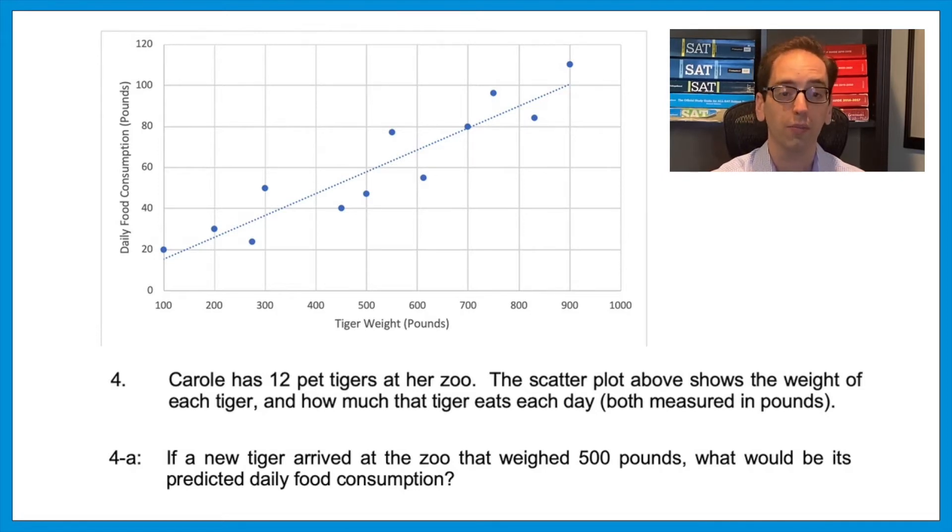If a new tiger arrived at the zoo that weighed 500 pounds, what would be its predicted daily food consumption? So let's go to where the graph says 500 on the x-axis. We need to follow that up to the line, but I'm stressing heavily, we go to the line and not the dot. On the line, it's going to hit around, let's call that about 58, just under 60 there. The answer would be 58, but it's not the dot, which is at about, let's call it maybe 45.